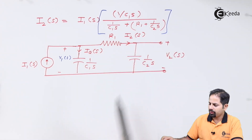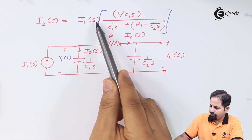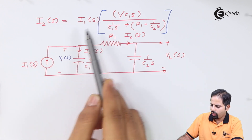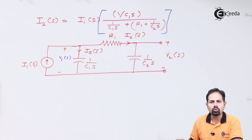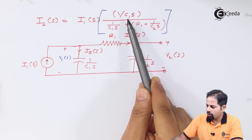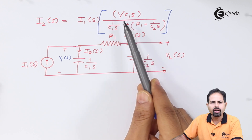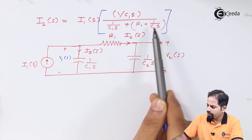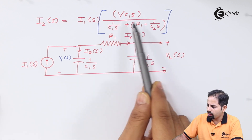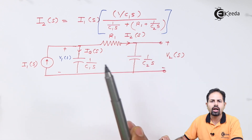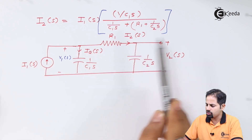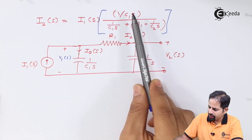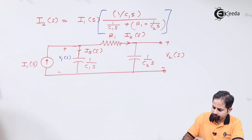This is a little complicated. We want the relation between i2 and i1. If the values of C and R are given, we will get the expression purely in terms of s and the problem will be solved. So we will simplify this and obtain the relation.